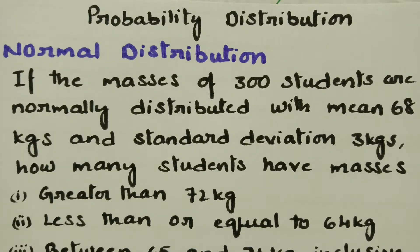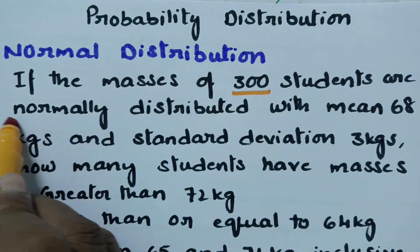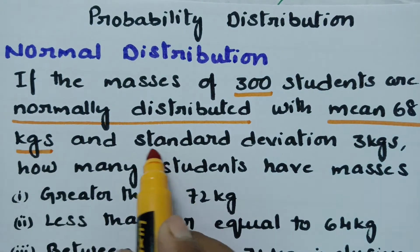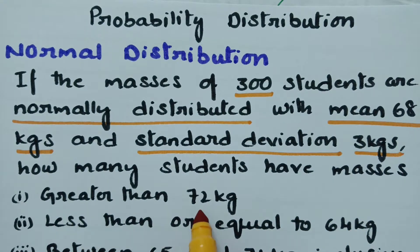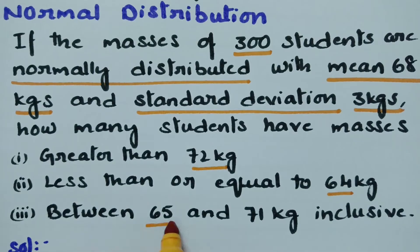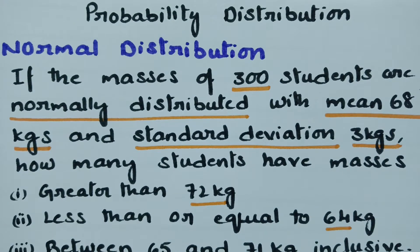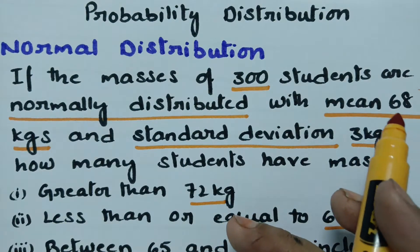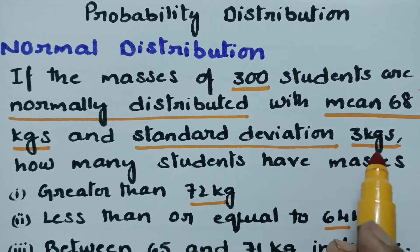This video is on normal distribution. Here is a problem: if the masses of 300 students are normally distributed with mean 68 kg and standard deviation sigma equal to 3 kg, how many students have masses greater than 72 kg, less than or equal to 64 kg, and between 65 and 71 kg inclusive?